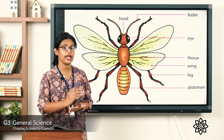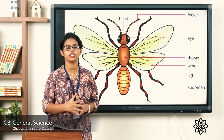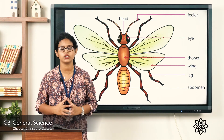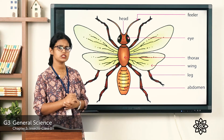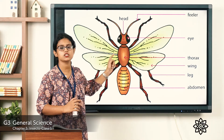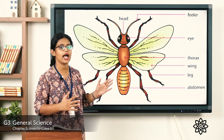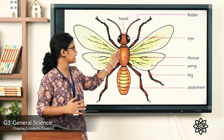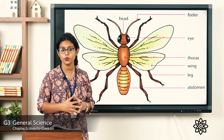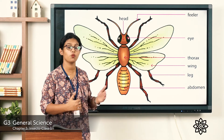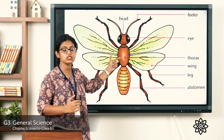The next part is the thorax, which is the middle section of the body of an insect. Insects have six legs, and all six legs are attached to the thorax. They also have two pairs of wings, and their wings are also attached to the thorax. Wings help them to fly, and legs help them to move from one place to another.